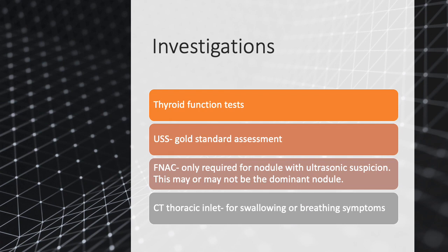For investigations of multinodular goiter, thyroid function tests are the first-line investigation to differentiate simple goiter from toxic goiter. Ultrasound scan of the neck is the gold standard, helping to check for suspicious nodules and cervical lymphadenopathy — the suspicious nodule may or may not be the dominant nodule. FNAC is only required for suspicious nodules on ultrasound, so ultrasound-guided FNAC is ideal. Features of retrosternal extension such as swallowing or breathing difficulties require CT scan of the thoracic inlet.